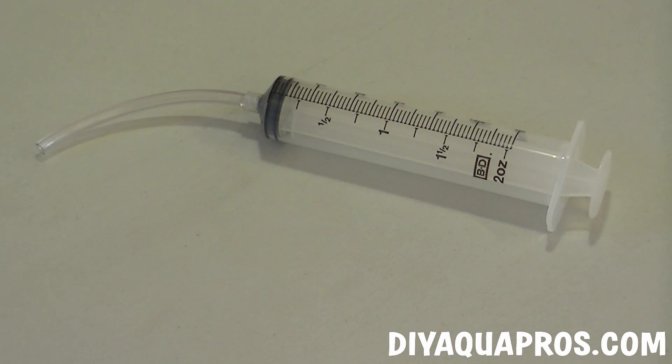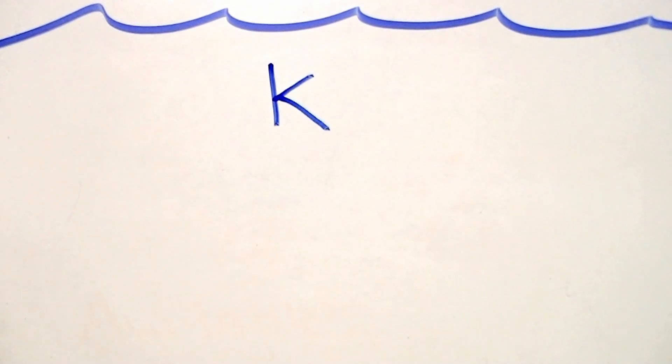We found that every four inches of this tubing will account for roughly one mil of solution. Now that we know what we need let's talk about what concentration of potassium we want to achieve in our aquarium and how to go about making that solution.